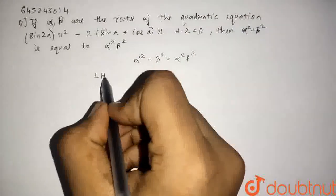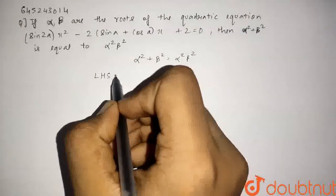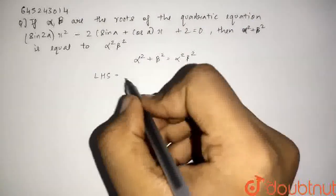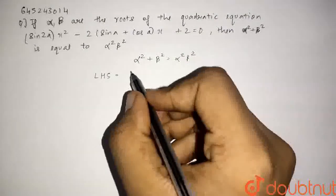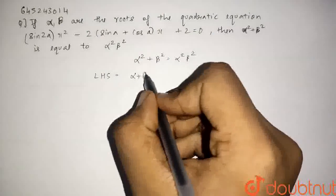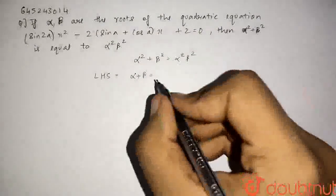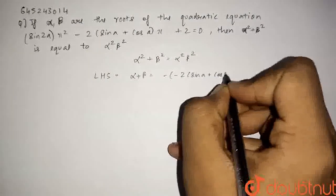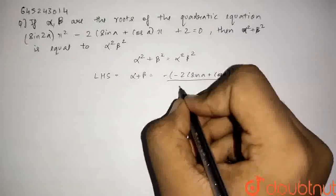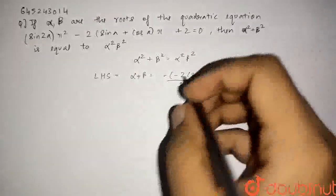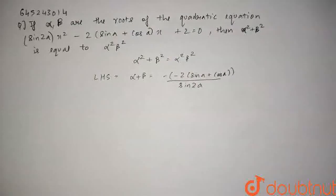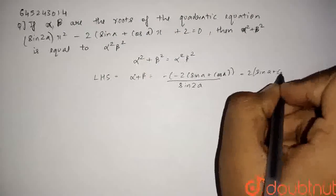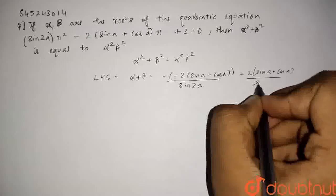So now we will firstly take the LHS, that is the left hand side. We will use the relation between the coefficients of the quadratic equation and its roots. For this equation, we know that alpha plus beta, the sum of the roots, is given by minus b by a, which equals minus of (minus 2 sin(a) + cos(a)) upon sin(2a), which is basically equal to 2 sin(a) + cos(a) upon sin(2a).